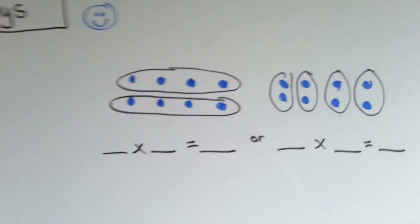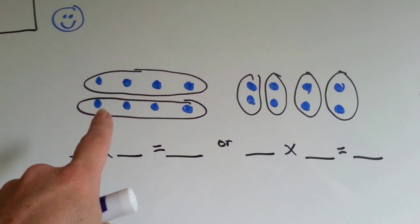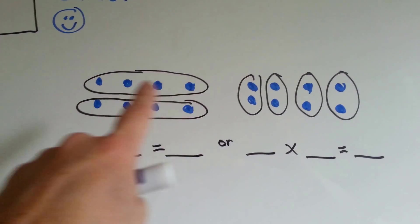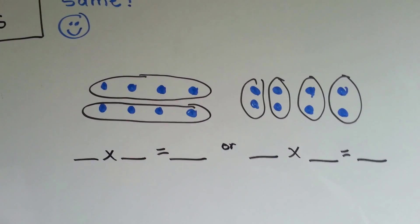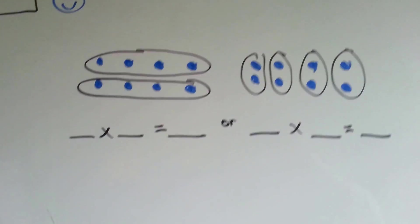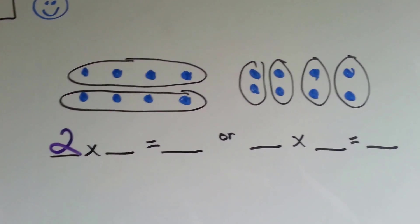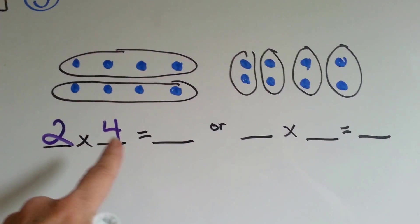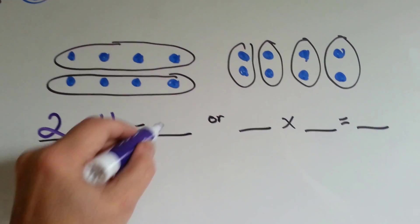Let's see if you can help me do this one. How many blue dots are there? Four. How many black circles are there? Two. So we have two black circles with how many in each circle? Four. Two times four equals eight.